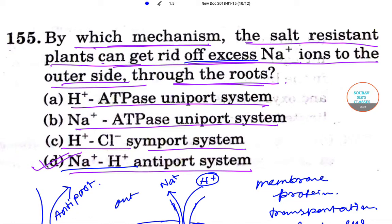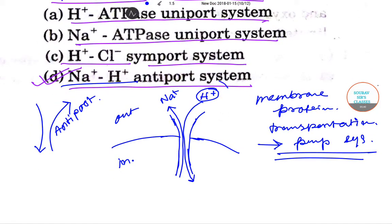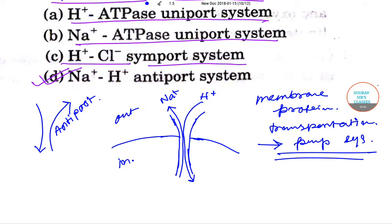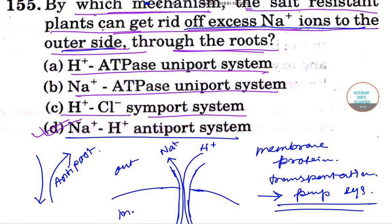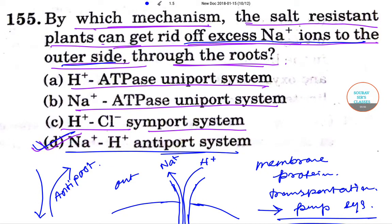So this is the sodium-hydrogen antiport system, by which the plant gets rid of excess sodium ions to the outer side. Therefore, the correct answer is option D.